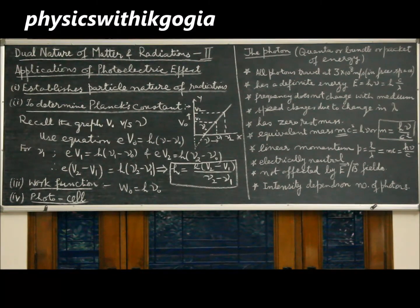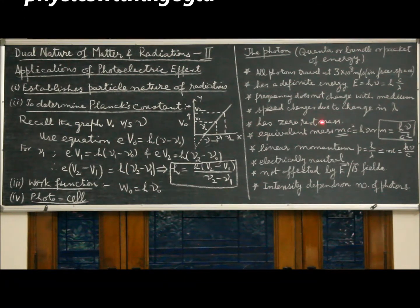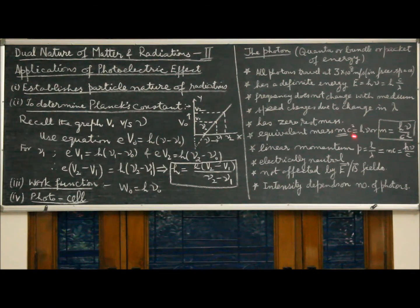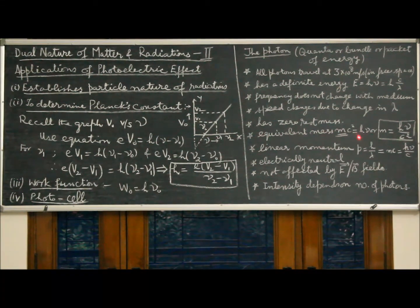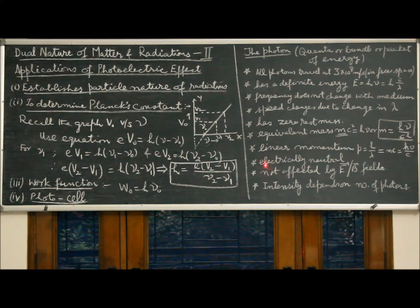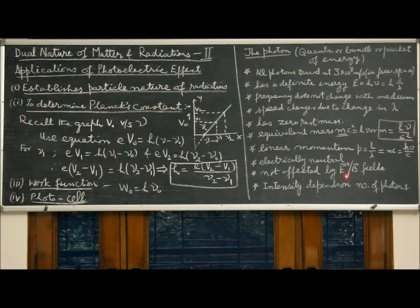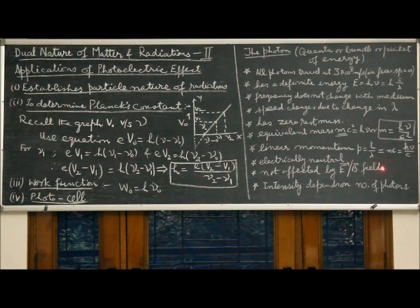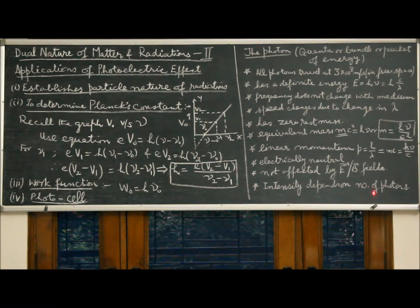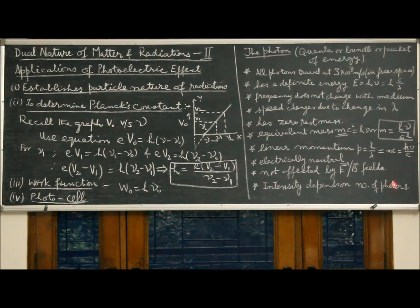Since a photon is energy in transit, it has zero rest mass. We cannot conceive a photon which is at rest. However, according to the equation mc squared equal to h nu, it has an equivalent mass given by mp equal to h nu over c squared. The linear momentum of photon is given by p equal to h by lambda, because p is mc, and you can use this equation mc equal to h nu by c or h by lambda. The photon is electrically neutral and hence it is not affected by electric or magnetic fields. These fields fail to deflect a photon from its path. The intensity of light depends on number of photons. Larger the number of photons, more is the intensity of the light emitted by a source.